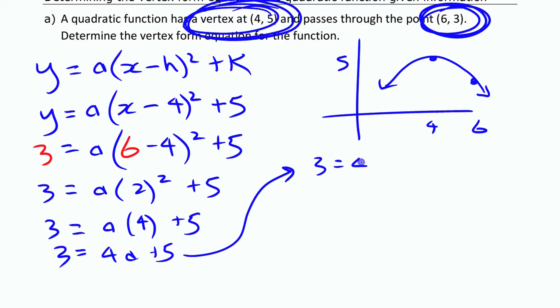I'm going to go over here with this. If I move the 5 to the other side, I have minus 2 equals 4a, and a is negative 2 divided by 4, which is negative 1 half. The a value in this case is negative 1 half. So I can go back and substitute that in, and that's my equation.